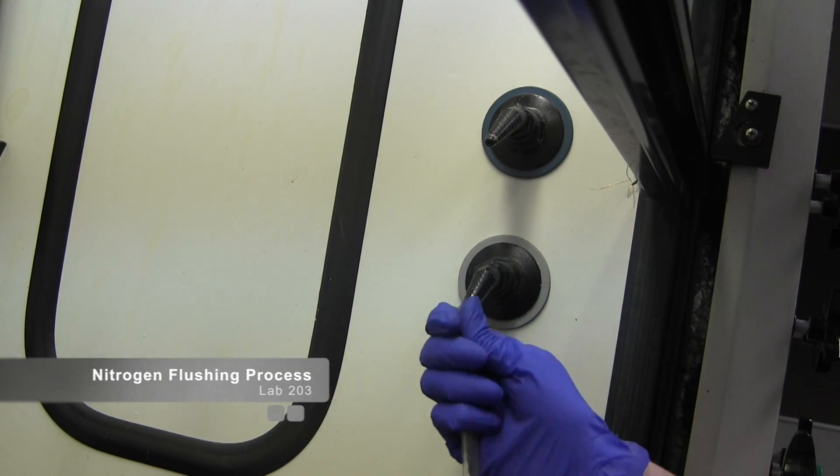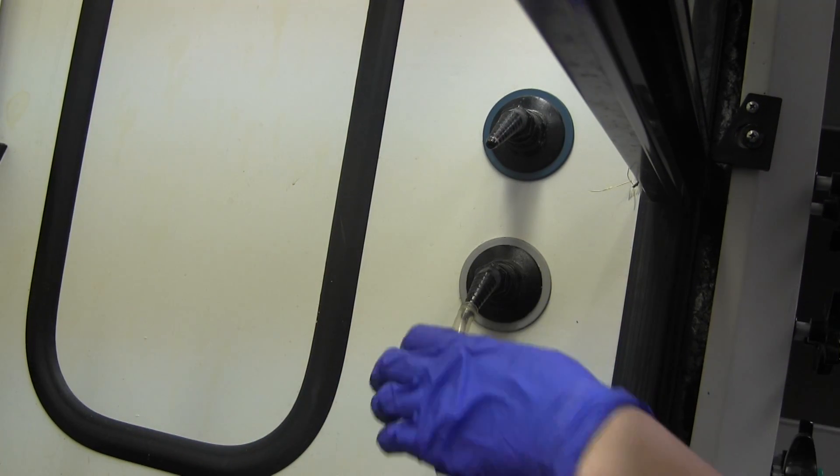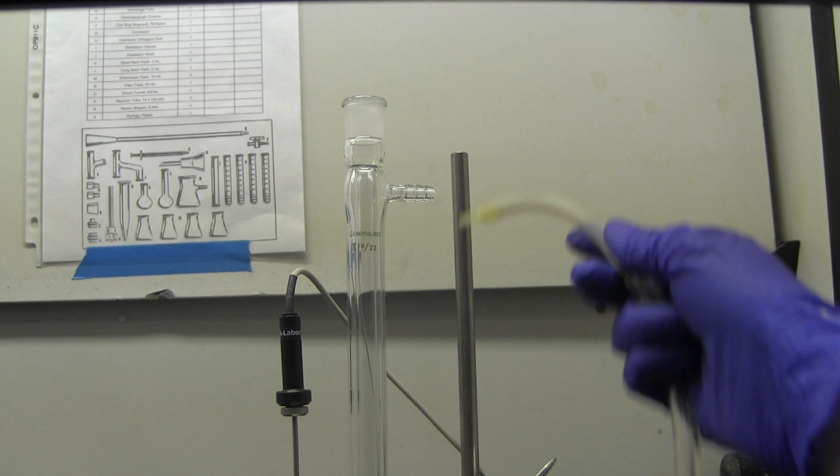To flush your system with nitrogen, attach a Teflon tube to the nitrogen outlet and insert the other end into your setup.